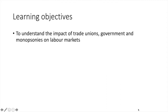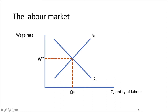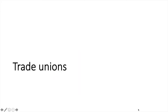In this video, you'll learn about the impact of trade unions, government and monopsonies on labour markets. Initially, we learned about the perfectly competitive labour market and studied this diagram. We are going to use this as our basis for analyzing the impact of trade unions, government and monopsonies. Let's start with trade unions.